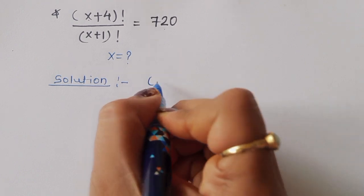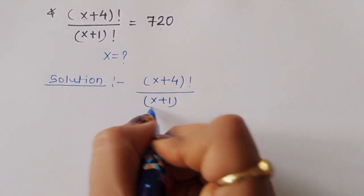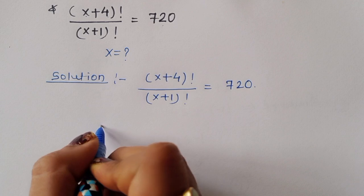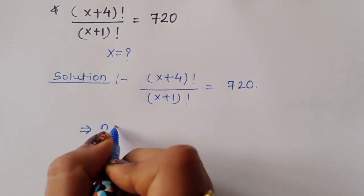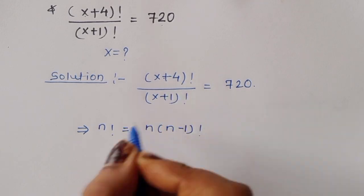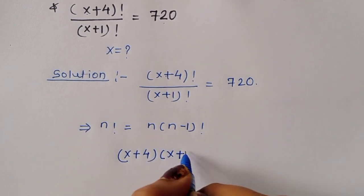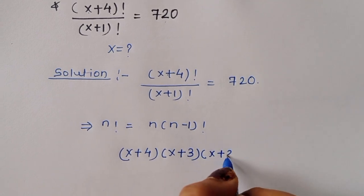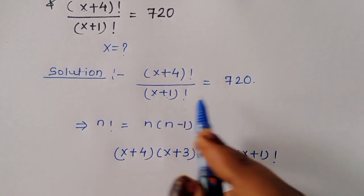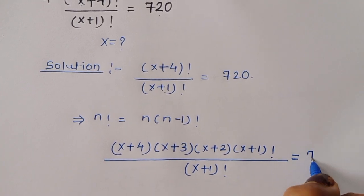We have (x+4)! divided by (x+1)! equals 720. Using the formula n! = n times (n-1)!, we can expand the numerator as (x+4)(x+3)(x+2)(x+1)!. Since (x+1)! is already in the denominator, we cancel it, leaving (x+4)(x+3)(x+2) = 720.